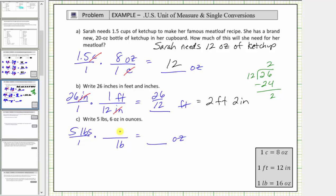The conversion is 16 ounces equals 1 pound, and therefore the unit fraction is 16 ounces divided by 1 pound. The pounds simplify to 1, and we're left with 5 times 16 ounces, which equals 80 ounces. So now we know 5 pounds equals 80 ounces.